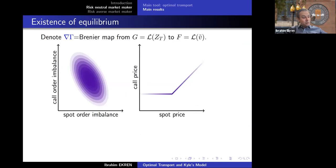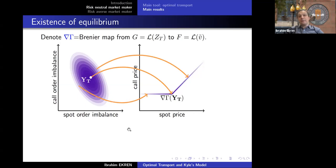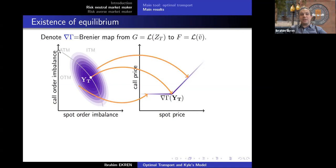Let me show how this works in Kyle's model. We have a Gaussian distribution — the distribution of Z_T, the noise trading at final time. On the other side, I have a joint distribution for stock and option price, which depends on the market maker's belief. By Brenier's theorem, there exists a convex gamma whose gradient maps one to the other. One structural property: there will be a curve in volume space splitting it in two — if you are below this curve, the option realizes out of the money; if above, the option realizes in the money.